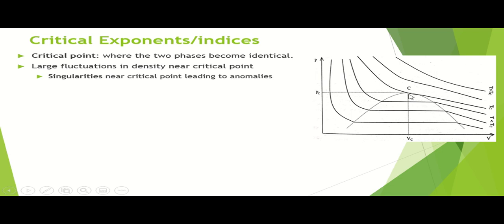At this critical point, you can think of a situation where the liquid phase and the gas phase are identical. That is the definition of critical point — both phases, let's say liquid and vapor or gas, are identical. That means liquid is also like gas and gas is also like liquid. So you can think here: what will be the density of water vapor and liquid water very close to this critical point?